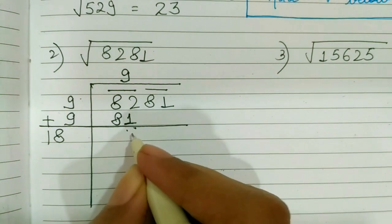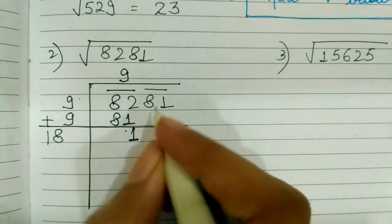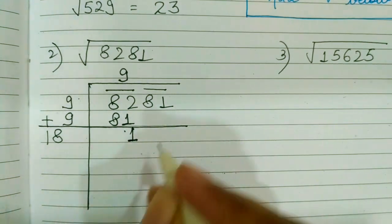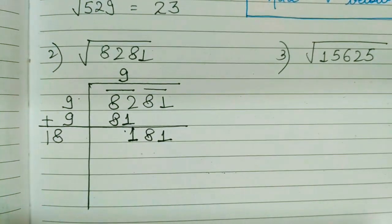On adding these I am going to get 18. 82 minus 81 will give me 1. Copy the next possible pair. 81 I have copied here.